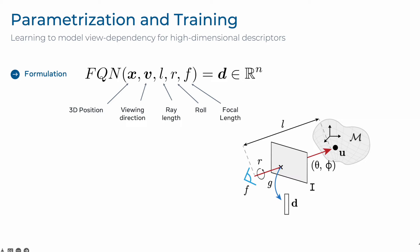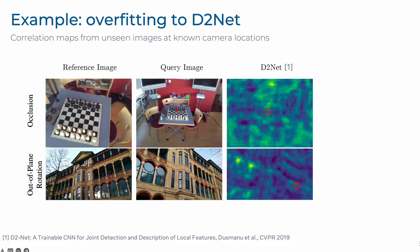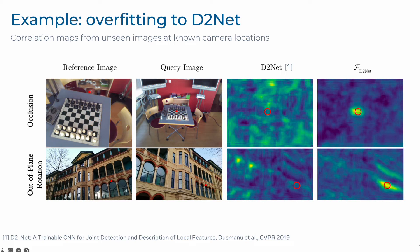Here is a qualitative example that demonstrates the power of FQNs. Going back to our previous example, we can now use FQN networks trained on these scenes to regress D2Net descriptors. We can see that using FQN networks to regress descriptors at ground-truth query camera poses, correlation maps are accurately predicted, and we can now successfully overcome the initial limitations of D2Net.